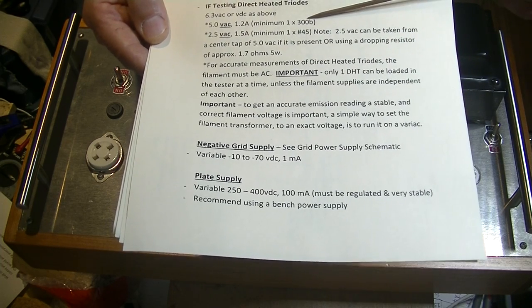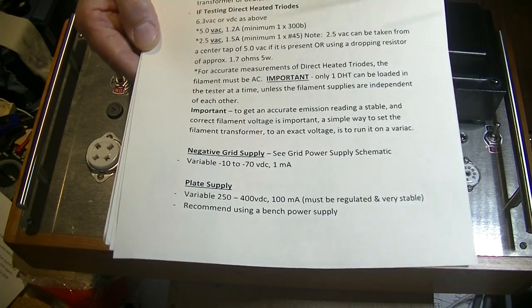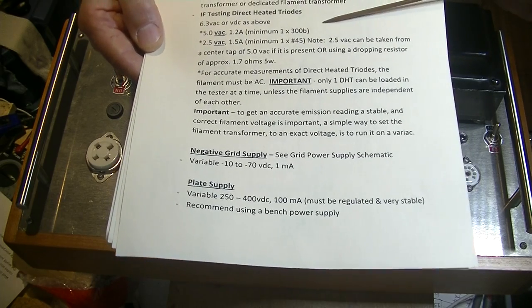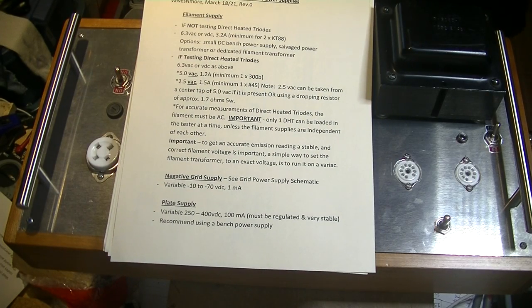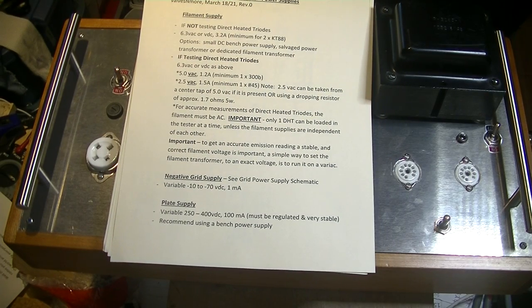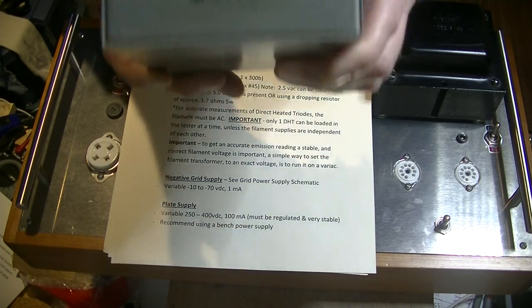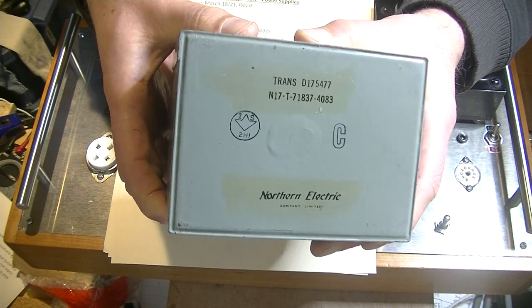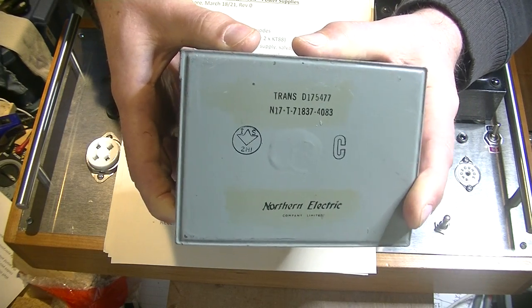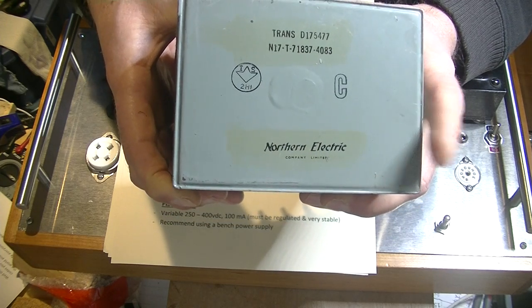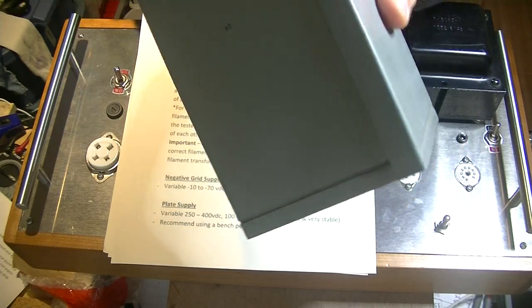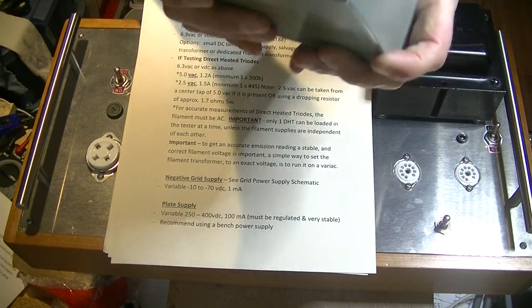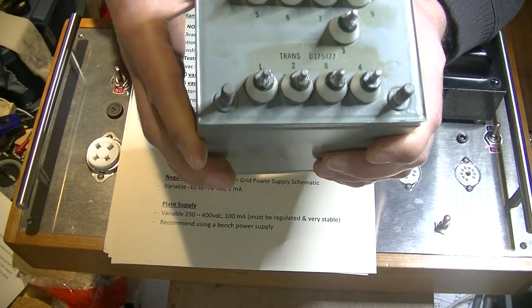The filament supply can be almost anything so long as it's stable and the voltage is accurate. But I've got an option that I just found. Found it after I built the prototype, of course. And it's a mil-spec filament transformer by Northern Electric, famous equipment manufacturer in Canada.